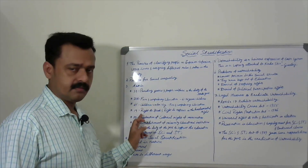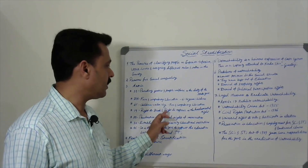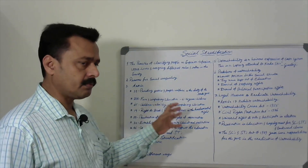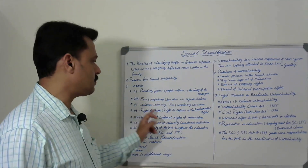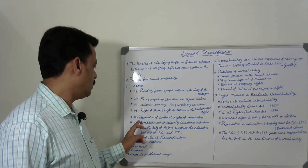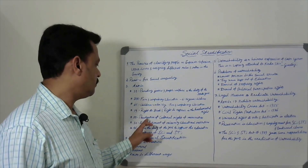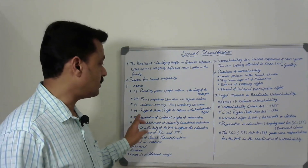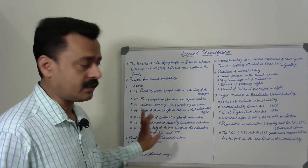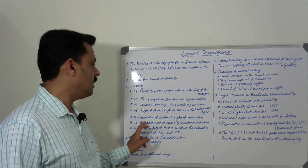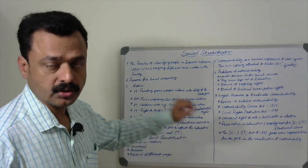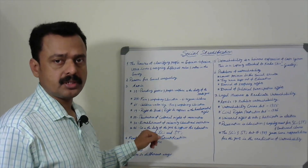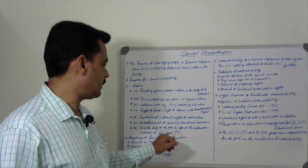Article 19 says about the right to speak and right to expression, which is a fundamental right of the people. Article 29 says about the protection of cultural rights of minorities — this is an important article. Article 30 also deals with the establishment of minority education institutions. Which article provides for the establishment of minority education institutions? That is Article 30.